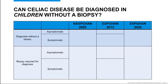The North American Society for Pediatric Gastroenterology, Hepatology, and Nutrition guidelines published in 2005 are the most clear. These guidelines do not allow for a diagnosis of celiac disease without a biopsy and make it a requirement for any patient with a positive TTG IgA or IgG.